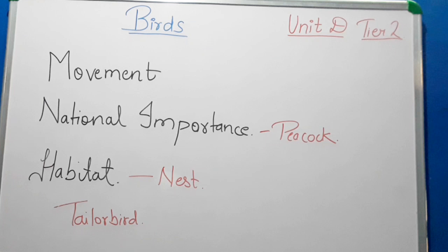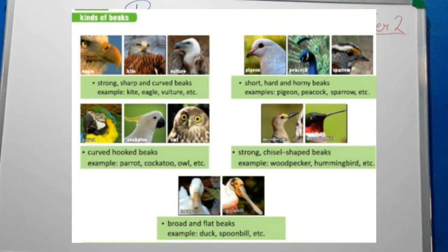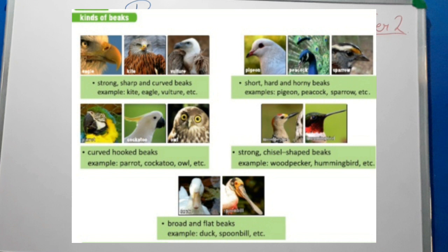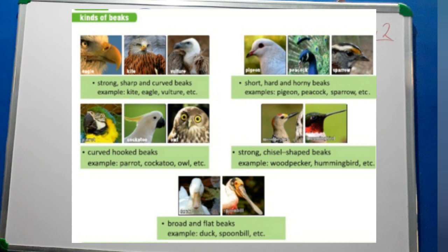Now let's see the kinds of beaks birds have. First, strong, sharp and curved beaks — examples: kite, eagle, vulture, owl. Second, short, hard and horny beaks — examples: pigeon, peacock, sparrow. Third, curved, hooked beaks — examples: parrot, cockatoo, owl. Fourth, strong, chisel-shaped beaks — examples: woodpecker, hummingbird. And finally, broad and flat beaks — examples: duck, spoonbill.